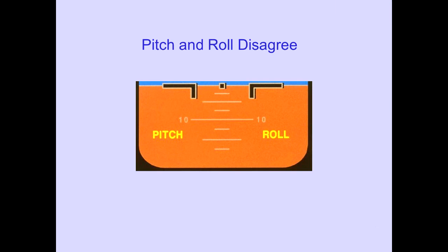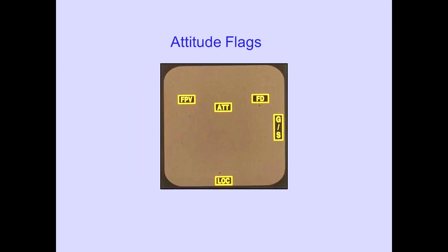Pitch and/or roll disagree flags are displayed when the captain's and first officer's pitch and/or roll attitudes differ. If the information is invalid, a flag is displayed.